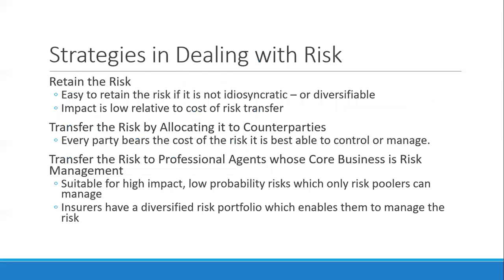There are different strategies in dealing with risk. The company may retain the risks it faces, or transfer them by allocating risks to counterparties — through EPC contracts, O&M agreements, supply agreements, or offtake agreements — allowing you to allocate risks to those counterparties best able to control or manage them. Lastly, you can transfer risk to professional agents such as insurers.